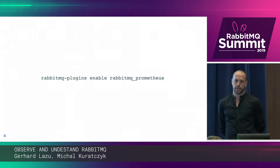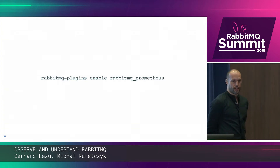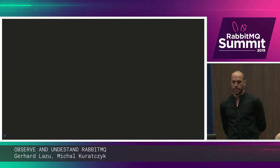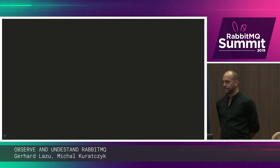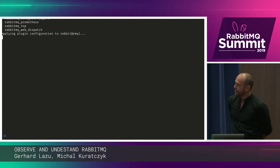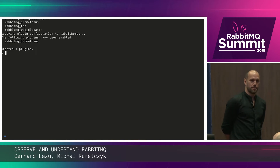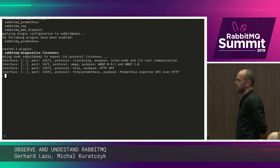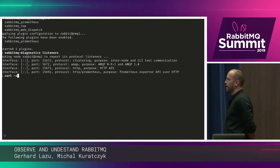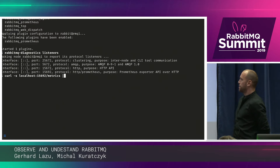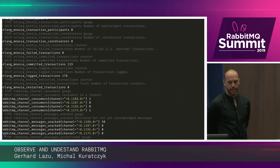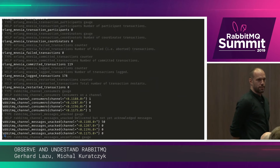In 3.8, we have a completely new Prometheus support provided as a built-in plugin. You need to upgrade to 3.8 and enable that plugin. That will add a new listener — you can see the Prometheus exporter at the end — and that will give you an endpoint that Prometheus can scrape to collect the metrics.